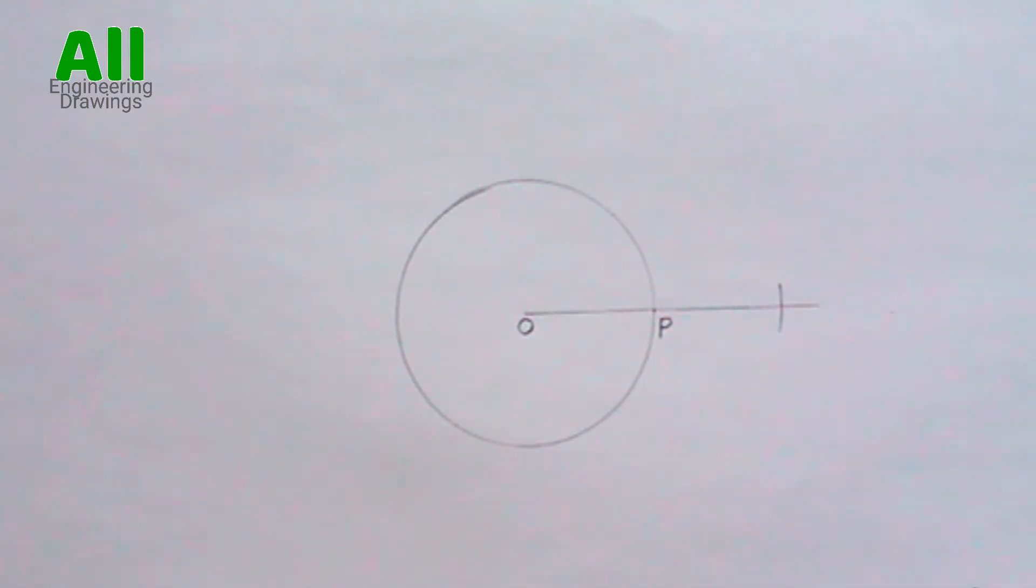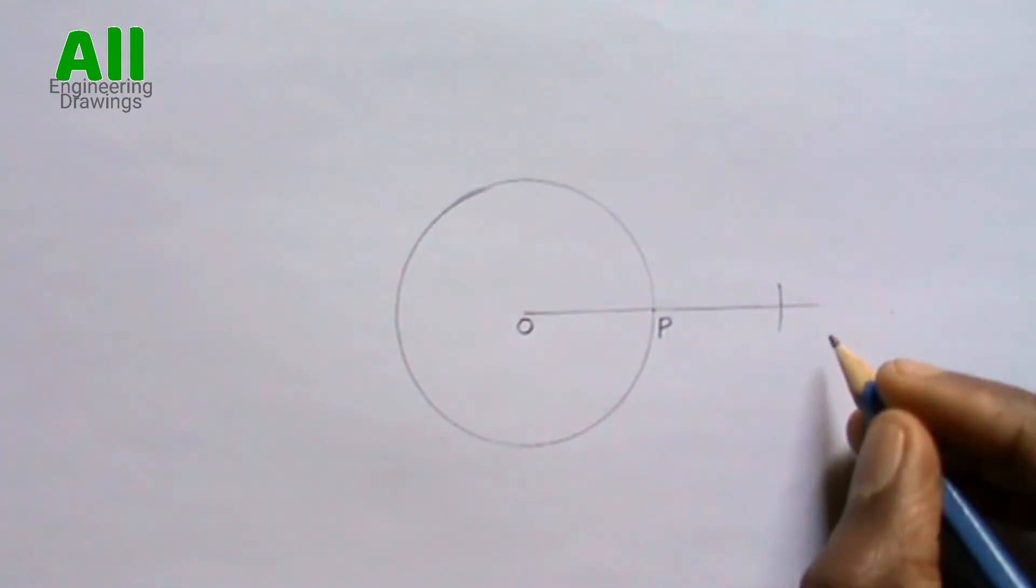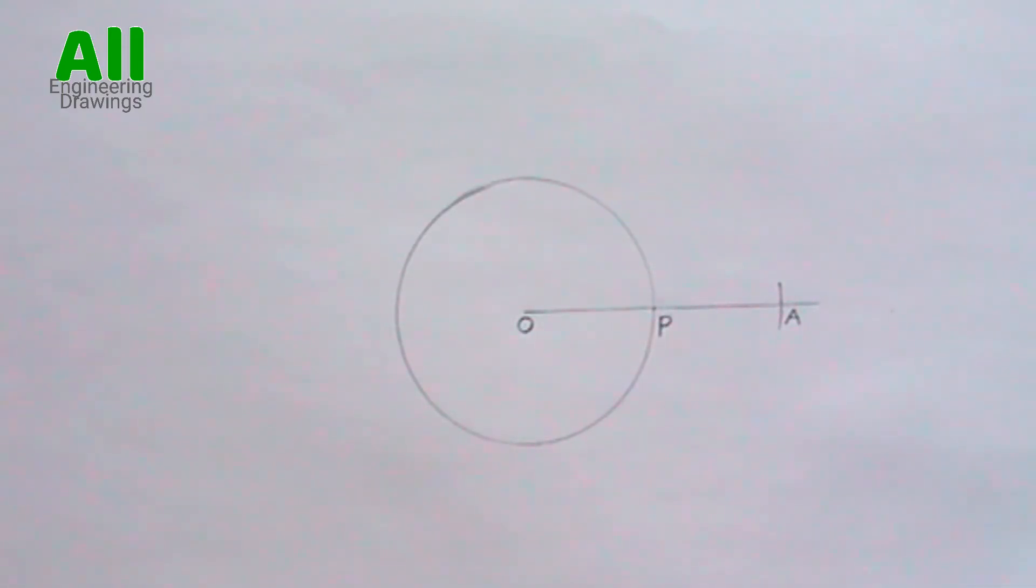Label the point where the arc cut through the extended line. Now bisect line OE.